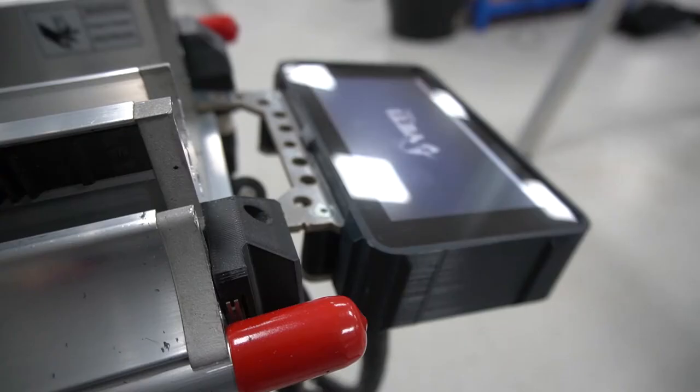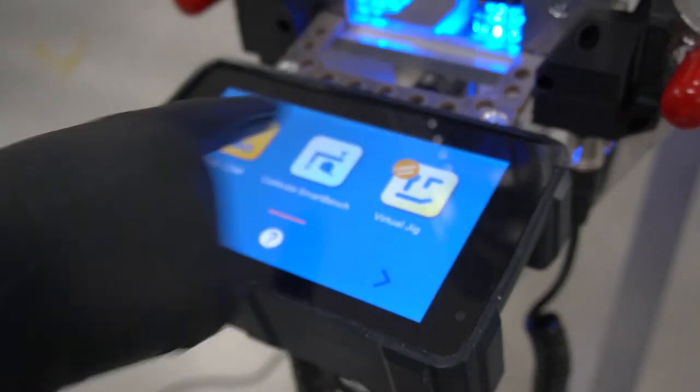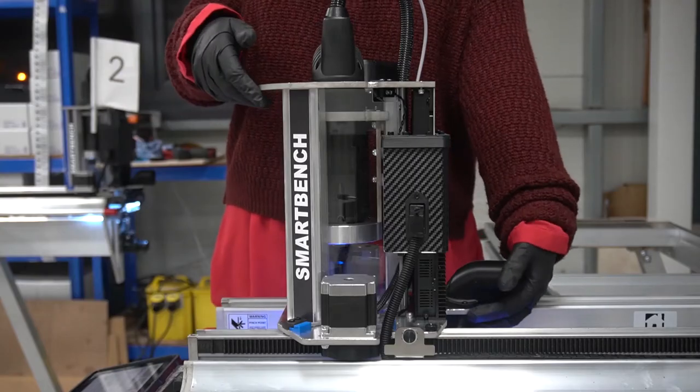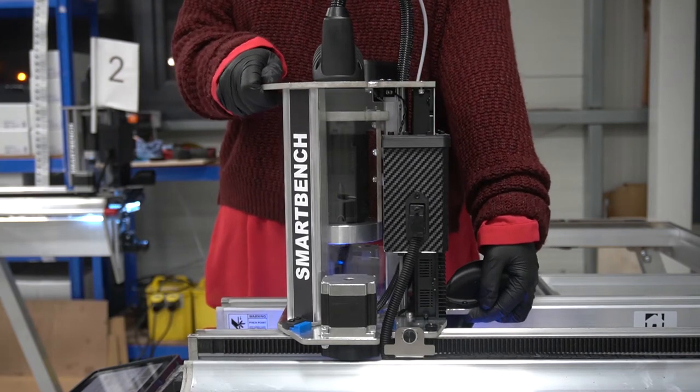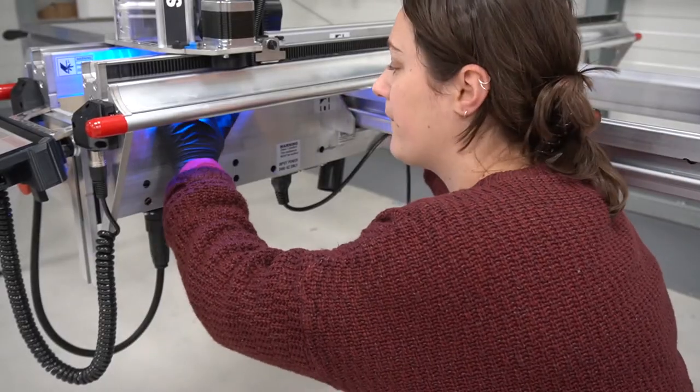First, power on your SmartBench and on the new calibration screen select yes calibrate. Before homing, ensure that the wheels and pinions are set by gently rocking each axis.